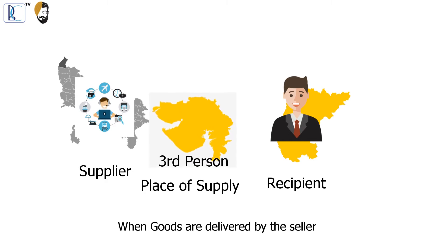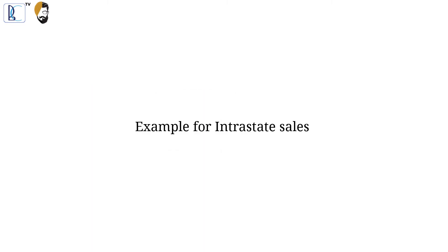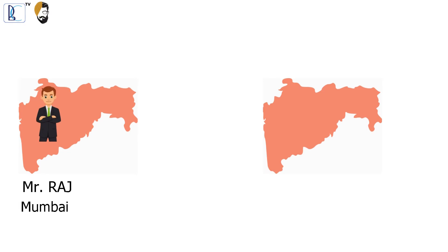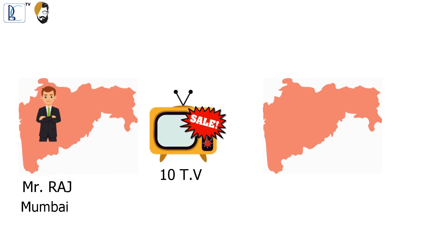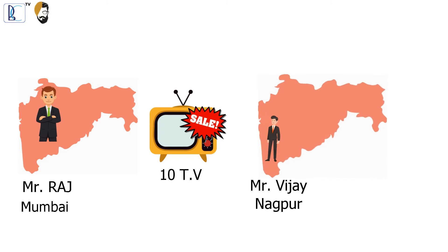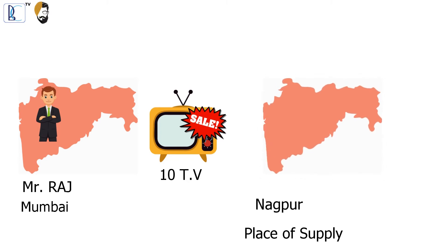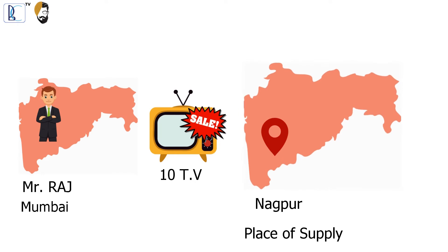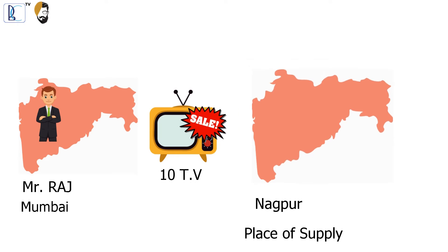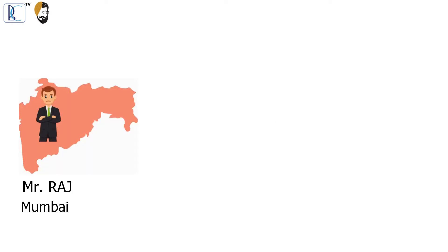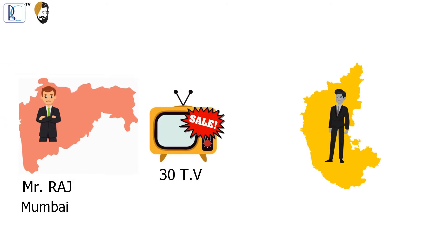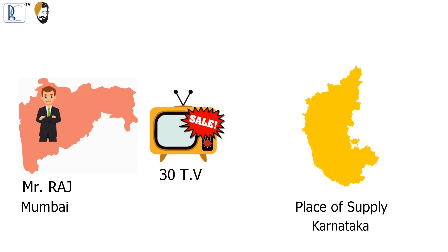Example — interstate sale: Mr. Raj of Mumbai, Maharashtra sells 10 TV sets to Mr. VJ of Bangalore, Karnataka. The place of supply is Bangalore, Karnataka. Since it is a different state, IGST will be charged.